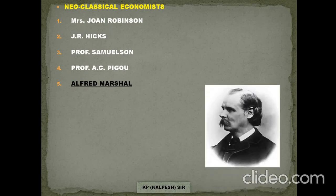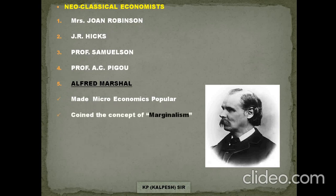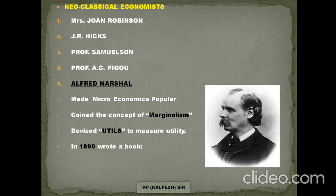The most important neoclassical economist is Sir Alfred Marshall — you can see him on the screen. He made microeconomics popular, which is a very important question regularly asked in boards. He coined the concept of marginalism, on which your entire microeconomics is based, especially the law of diminishing marginal utility. He also devised the concept of 'utils' as a unit to measure utility. In 1890, he wrote a book called 'Principles of Economics.'